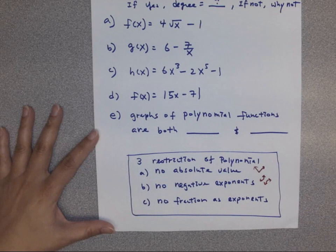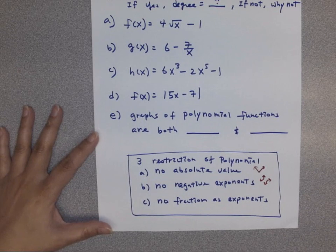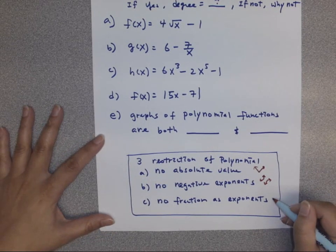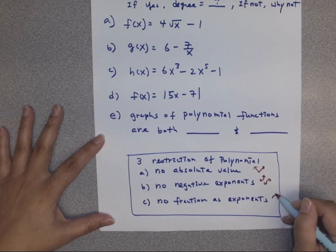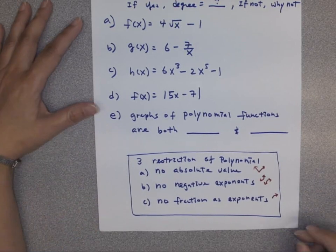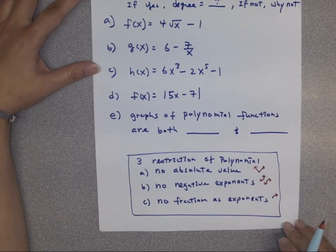Fraction exponents are a lot of times radicals — square root, et cetera. So they may have some sharp turn or they may not be continuous, like square root.